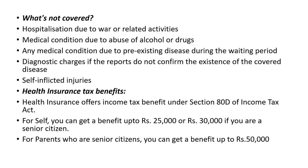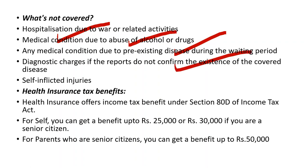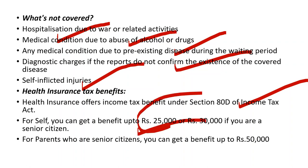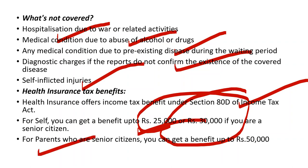Now, what will NOT be covered in health insurance: hospitalization due to war or related activity; medical conditions due to abuse of alcohol or drugs; pre-existing medical conditions within the waiting period; diagnostic charges if the report does not confirm the existence of a covered disease; and self-inflicted injuries or suicide attempts. For tax benefits, health insurance falls under Section 80D of the Income Tax Act. If you take it for yourself and are a senior citizen, you get a benefit of up to 25,000 to 30,000. If you are paying for your parents who are senior citizens, you get a benefit of up to 50,000.